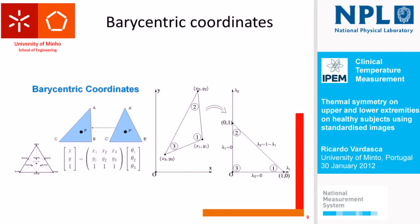I used barycentric coordinates — also called homogeneous coordinates — which have a particular property: between two polygons of the same number of vertices, every pixel inside has a correspondence. This was the key problem to solve when translating quantitative data from one image to another without losing or scrambling data. The only way to enforce that correspondence was using barycentric coordinates. This approach works if the change in scale is less than 10% — beyond that, you start introducing significant error. Within that range, the error is less than 2%.